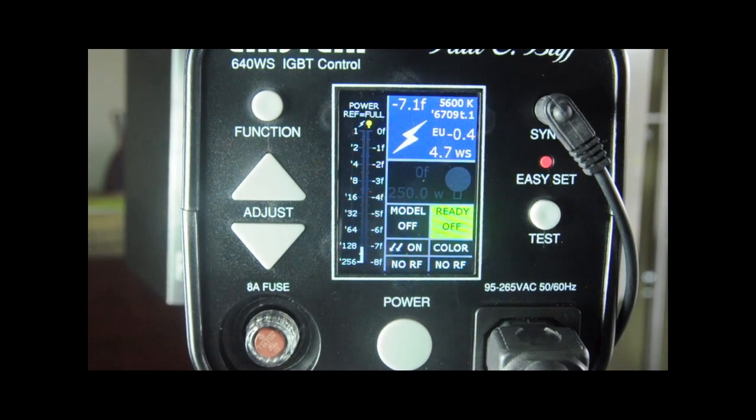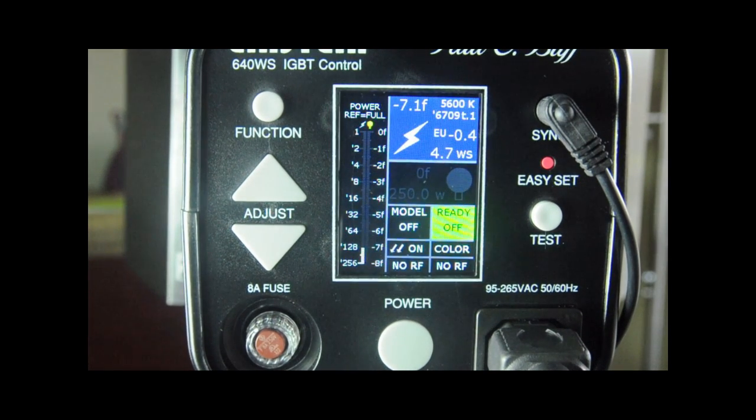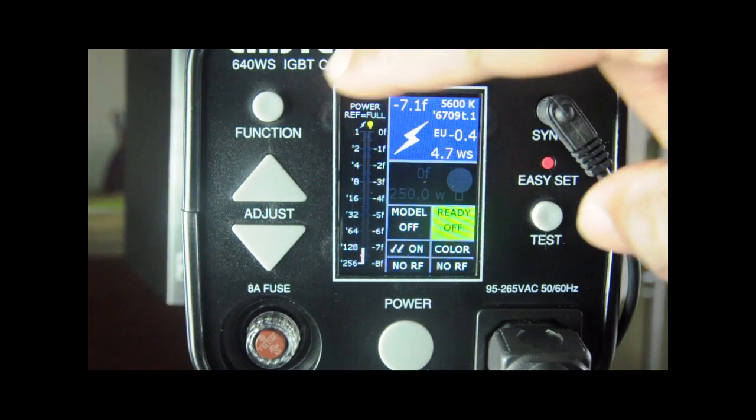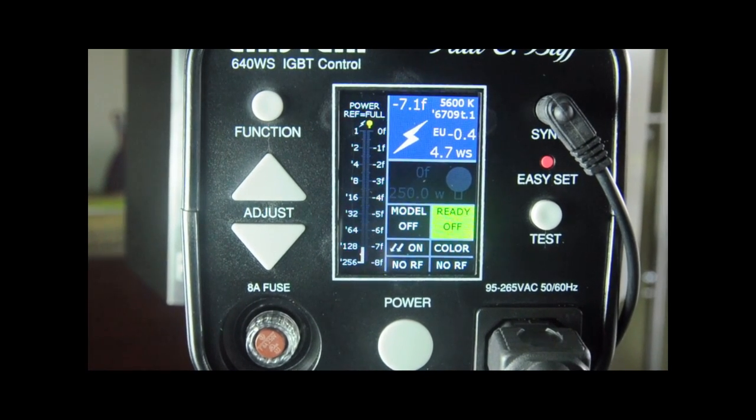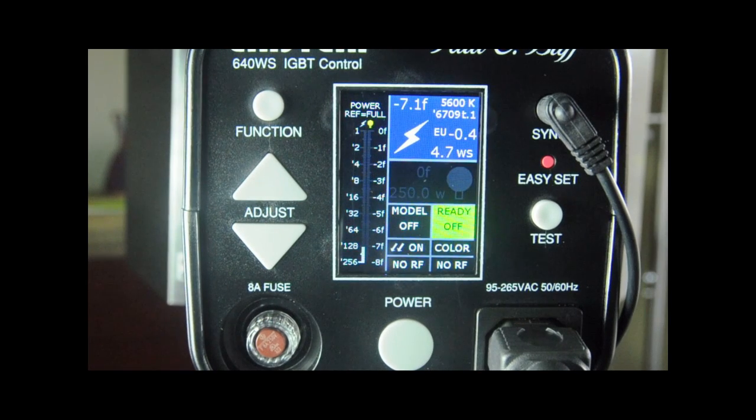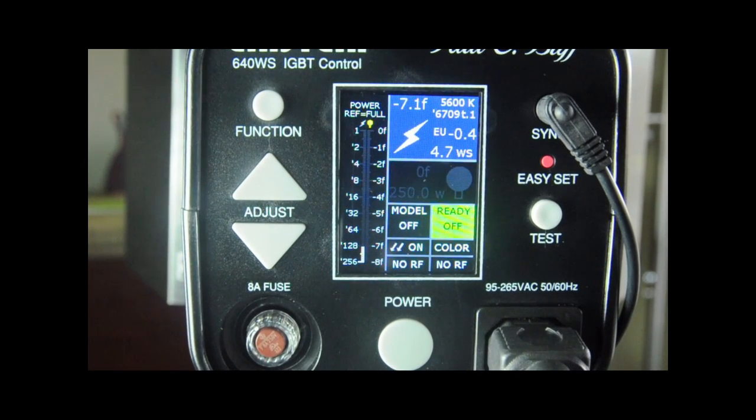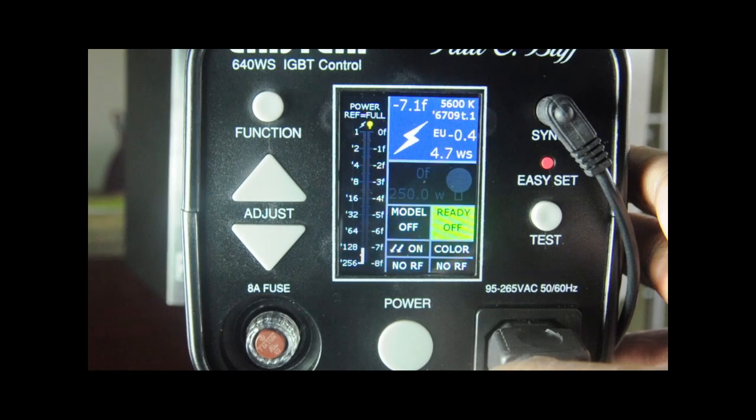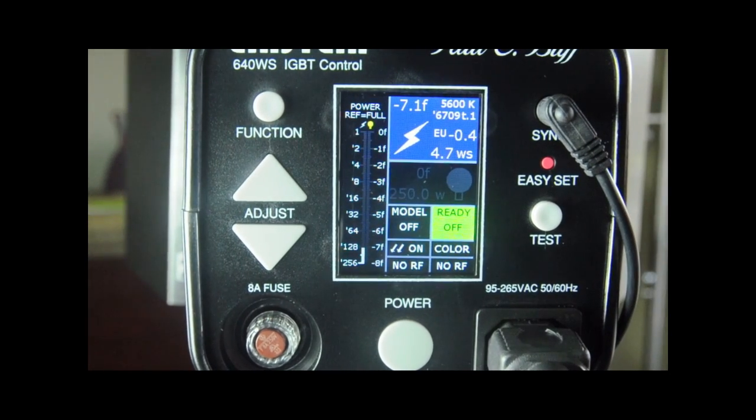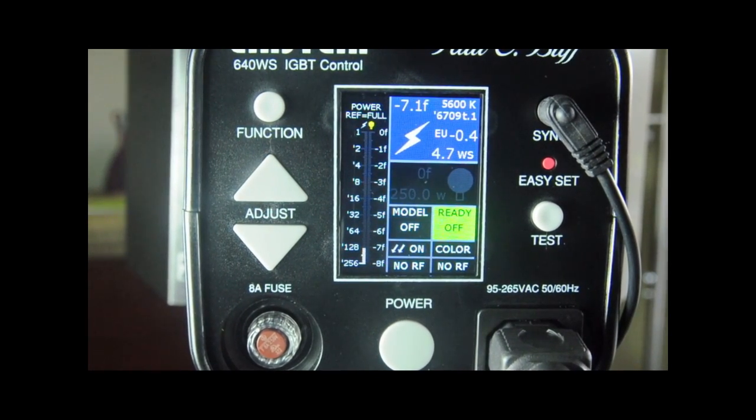This is Leonardo at Leonardo's Lens, and today we're going to talk about the Einstein 640WS by Paul C. Buff. The 640WS in the name refers to its power level: 640 watts per second, a lot more powerful than your speedlights or small strobes. The beautiful thing is it's about the same price, so not only do you get more power on the high end, but at the lower end you get a much lower power setting.